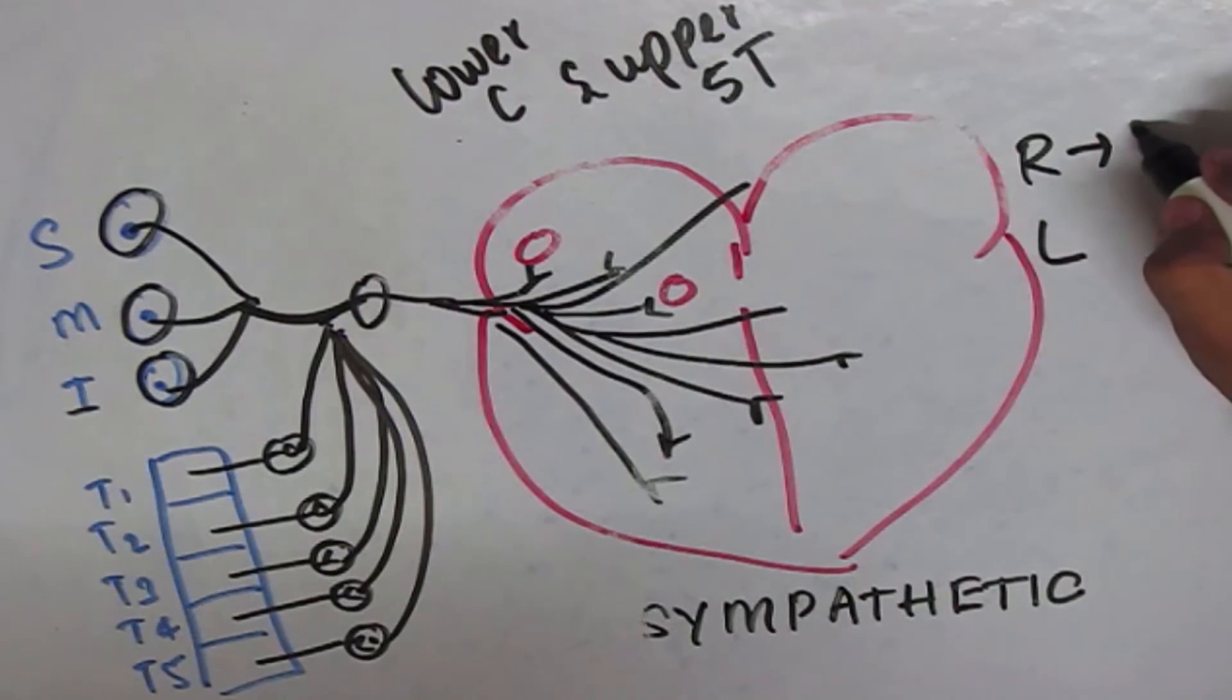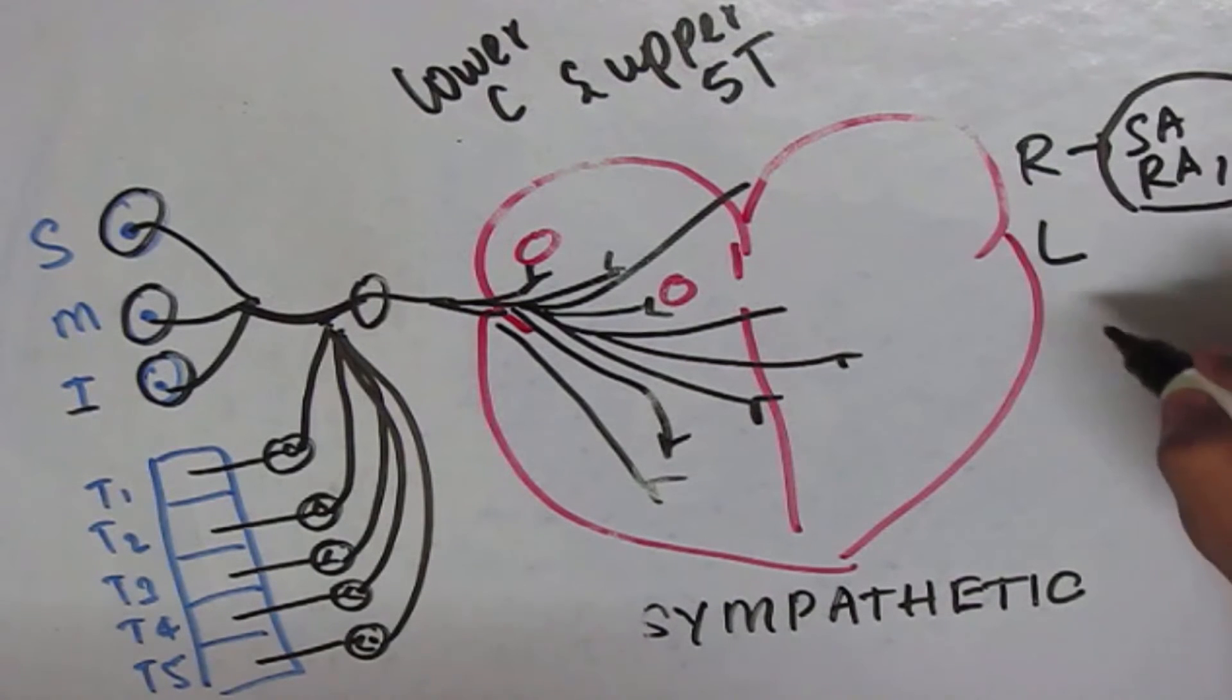The right sympathetic division supplies the SA node, the right atrium, and the right ventricle. The stimulation will cause increase in heart rate.